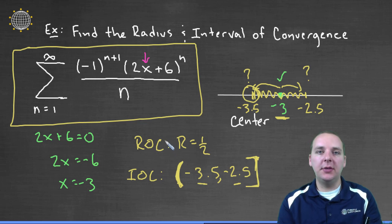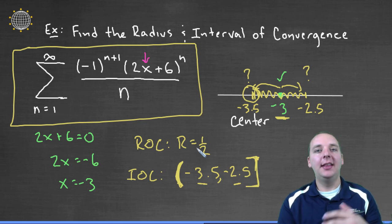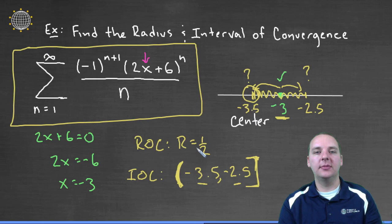So we've done pretty much everything we need to do. We found the radius of convergence. We used that to find the interval of convergence. And then we tested the endpoints separately for their convergence.